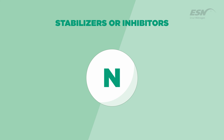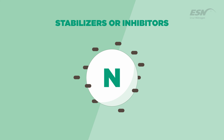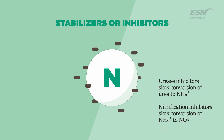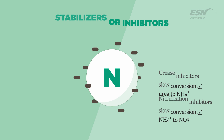The first group, the inhibitors or stabilizers, are chemicals that are added to the fertilizer that slow the rate of transformation of one form of nitrogen to another, thereby reducing the exposure of a particular form of nitrogen to a specific loss mechanism.